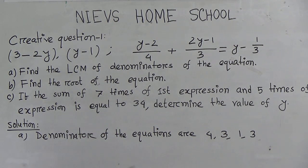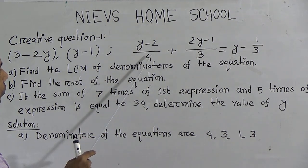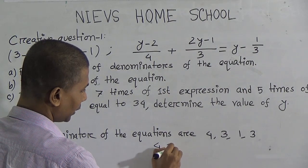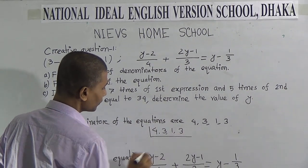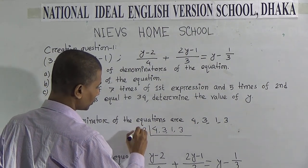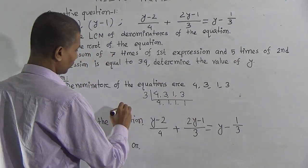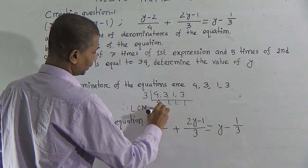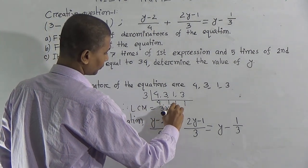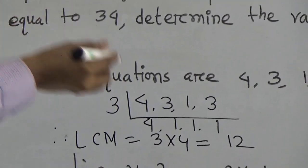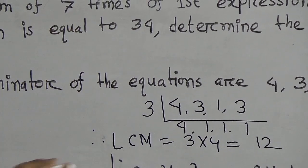Now, find the LCM of the denominators of the equation. The denominators are 4, 3, 1, and 3. We need to determine the LCM of these denominators: 4, 3, 1, 3. Here 3 is the only common factor. Writing them out: 4, 1, 1, 1. Therefore, LCM equals 3 into 4, that means 12. This is the LCM of the denominators, which equals 12.